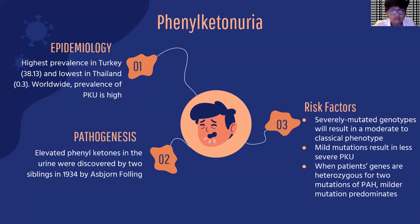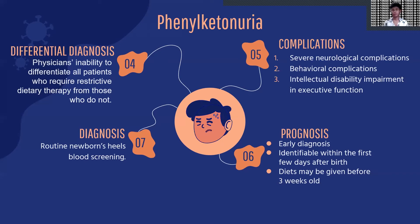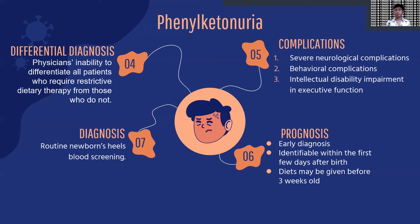PKU was first discovered through national blood screening programs. Physicians managing patients with hyperphenylalaninemia are acutely aware of their inability to differentiate all patients who require restrictive dietary therapy from those who do not. One common method of differentiating phenylalanine levels is through measuring the blood's response as a patient digests a natural protein diet with standard phenylalanine content.